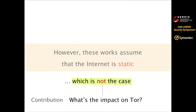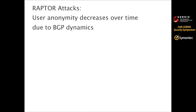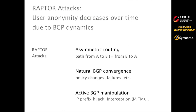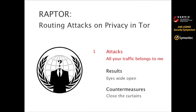The question we ask in this study is: what is the impact on Tor of the internet being dynamic? The short answer is user anonymity decreases. We will show this by introducing three new attacks called RAPTOR attacks that exploit the following three aspects of BGP routing dynamics. First, asymmetric routing — the path from A to B is often different from the path of B to A. Second, natural BGP convergence — BGP routing could be changing all the time due to policy changes, link failures, and so on. And lastly, active BGP manipulation by launching a BGP prefix hijack or interception.